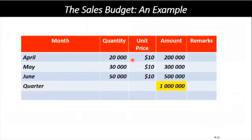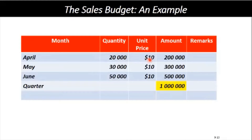This could also be shown the other way around — sideways. You have the month coming down this way, the quantity, the unit price, and the amount in the end column, and a column for any remarks you want to make. For April, twenty thousand units multiplied by ten dollars gives two hundred thousand dollars. When you add down this way, you will get your total sales.